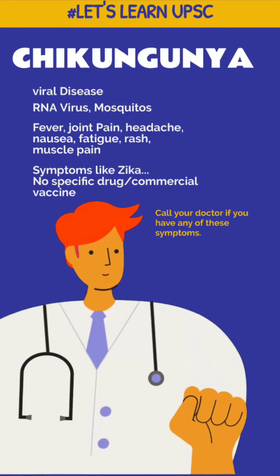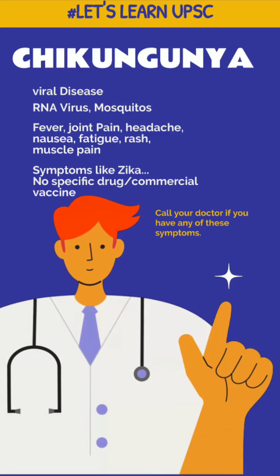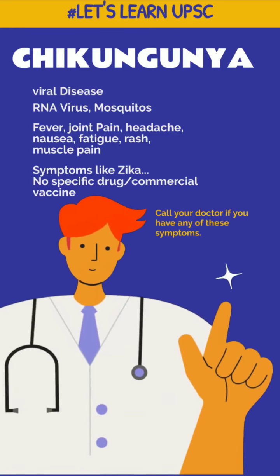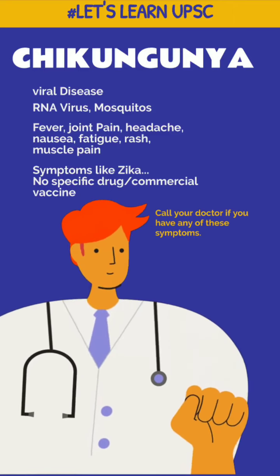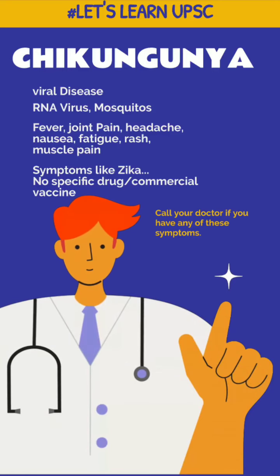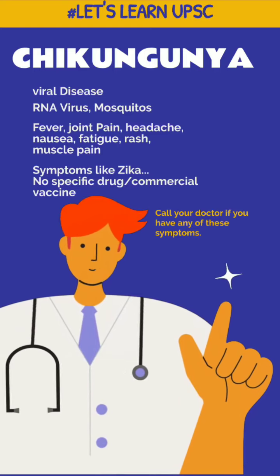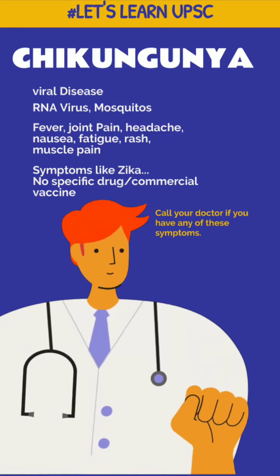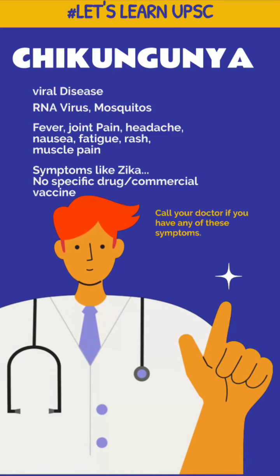Regarding transmission: as already mentioned, mosquitoes transmit this disease. When an infected female mosquito bites a human being, the disease is transmitted. The two mosquito species that commonly transmit Chikungunya are Aedes aegypti and Aedes albopictus. These same two mosquito species also transmit dengue.